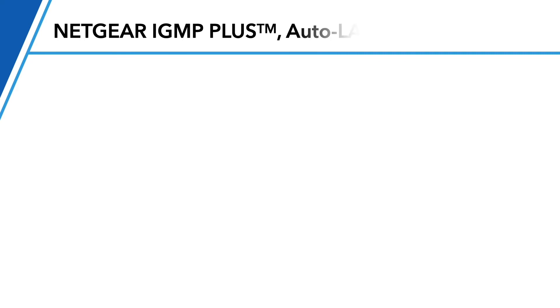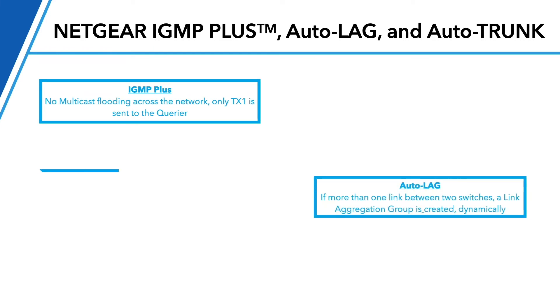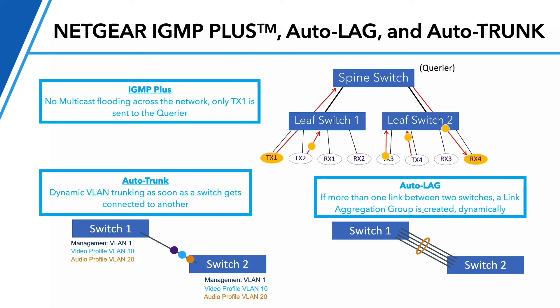Here's how IGMP+ works: you have a core switch acting as querier, with Switch 1 and Switch 2 underneath, each with encoders and decoders. Multicast stays local on each switch. Only when Receiver 4 on Switch 2 subscribes to a source on Switch 1 — Transmitter 1 — will that single stream traverse the network. Nothing else floods across the network. And if there's a shorter path available, traffic won't even need to go through the querier.